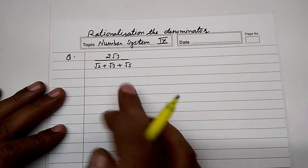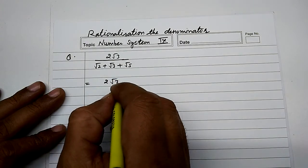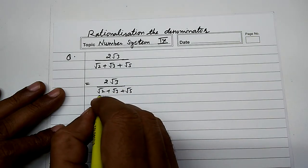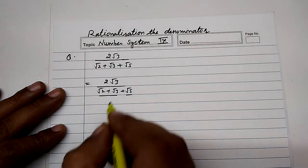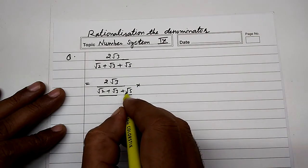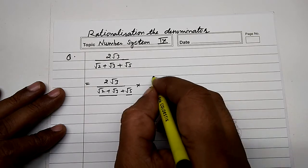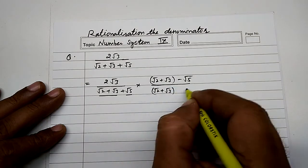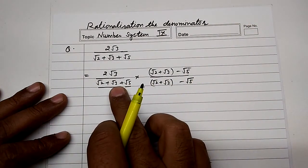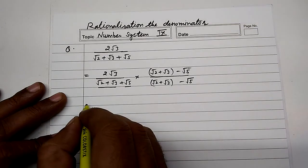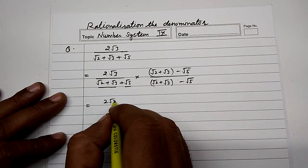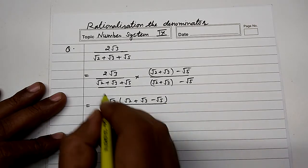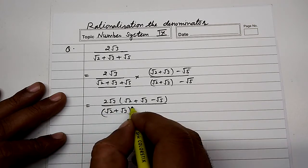Now we have to rationalize the denominator. We multiply by (√2 + √3 − √5) over (√2 + √3) whole squared, using the identity (a + b)(a − b) = a squared minus b squared, where the first term is (√2 + √3) and the second term is √5.